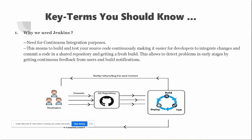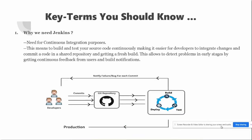As shown in the diagram, developers commit code to the Git repository. Once committed, a Jenkins job will build the code, test it, and deploy it to the stage environment. If any stage fails, it notifies the developers, making it easier to identify bugs early before moving to production. This way Jenkins helps developers have continuous feedback on their code in an Agile methodology.